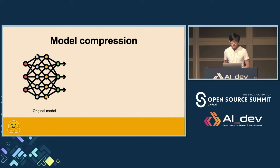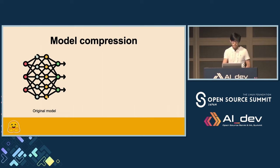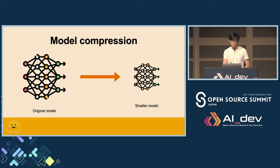I'll talk about a few model compression techniques. The goal of model compression is basically: we have the original model and we want to make a smaller model that performs basically the same.